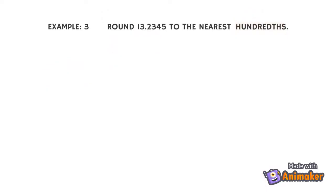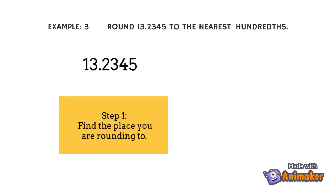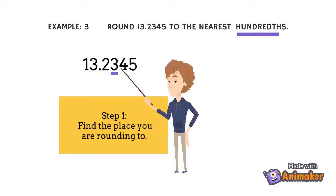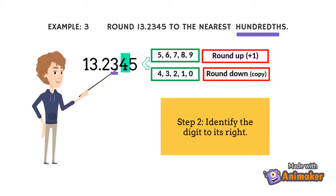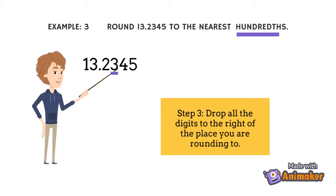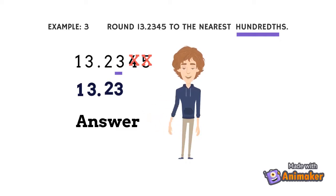Example 3: Round 13 and 2345 ten-thousandths to the nearest hundredths. Step 1: Find the place you are rounding to. Step 2: Identify the digit to its right. Since it is 4, which is below 5, then we are going to round down. To do that, just copy the digit to be rounded off. Step 3: Drop all the digits to the right of the place you are rounding to. Just copy 3, bring down 2, decimal point, 3 and 1. So the answer of 13 and 2345 ten-thousandths rounded to the nearest hundredths is 13 and 23 hundredths.